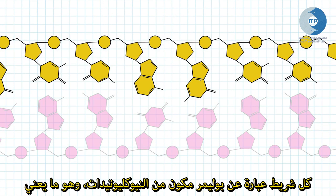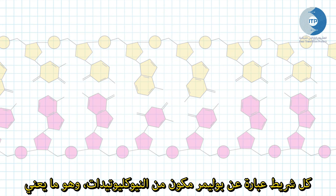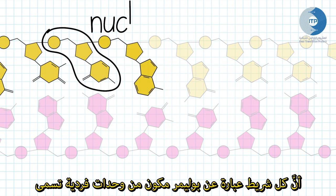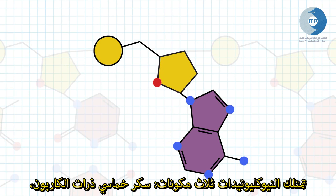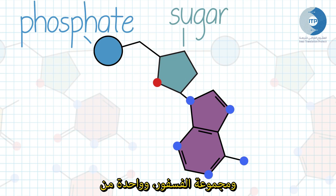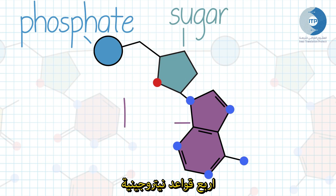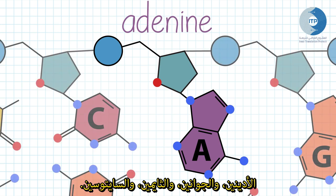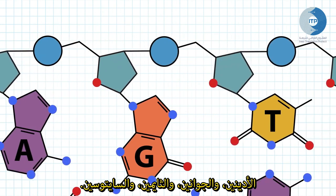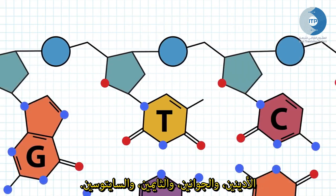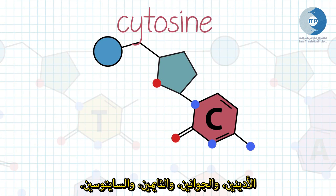Each strand is a polynucleotide, meaning the strand is made up of many individual units called nucleotides. A nucleotide has three components: the 5-carbon sugar, a phosphate group, and one of four possible nitrogenous bases — adenine, guanine, thymine, and cytosine.